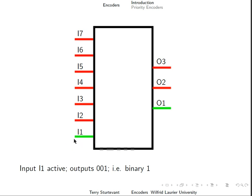Now input 1 is high, indicated by the green, and so the outputs encode the number 001, which is binary 1.